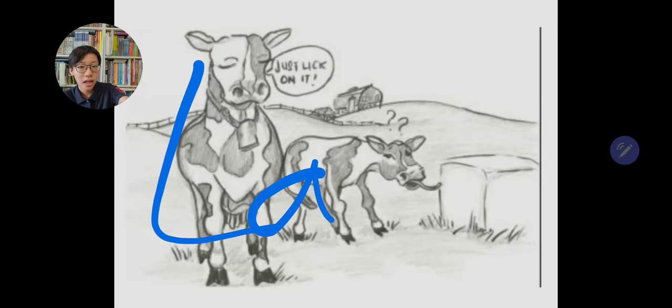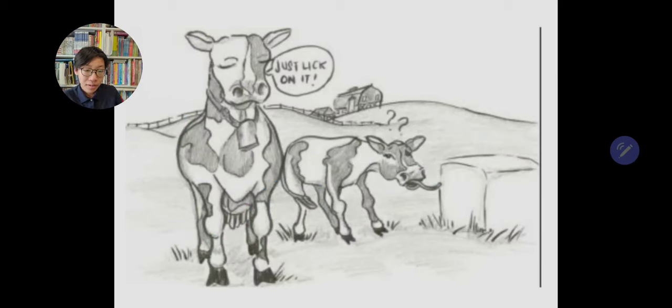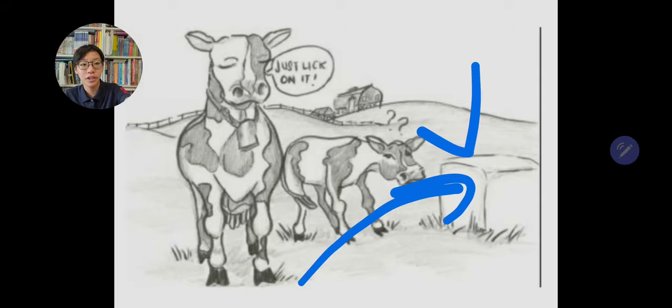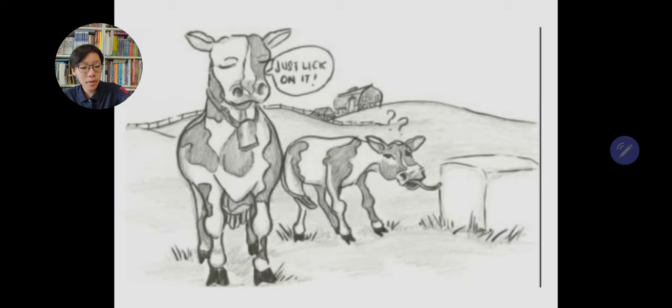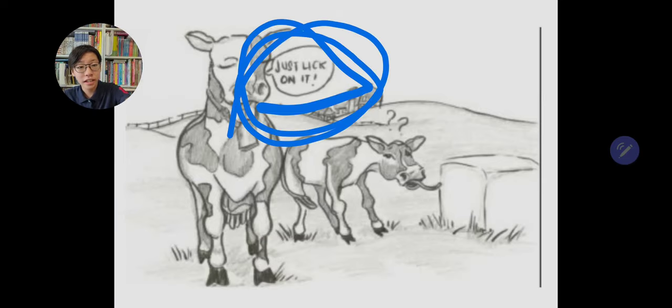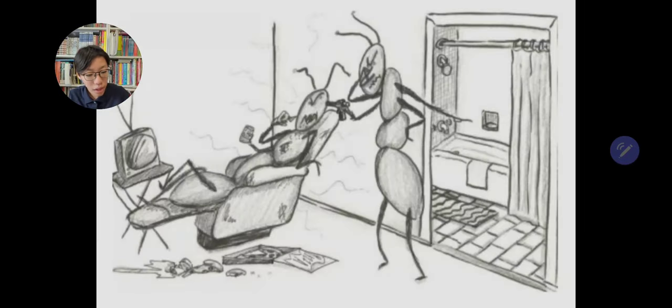Next up, we have laconic. Laconic just basically means brief. And here, this is milk. I'm pretty sure it's cheese. And they're like, this is good for your own health, mommy. And so just lick on it, man. Just lick on it. That's how you remember laconic.